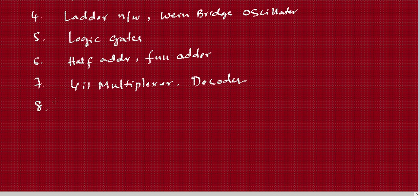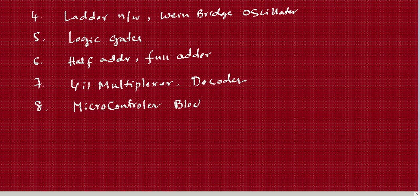At the end of Module 2, the microcontroller block diagram is very important. In the block diagram, you need to explain all the blocks connected to the CPU — around the CPU there will be memory and other components. Study and explain the microcontroller block diagram thoroughly.